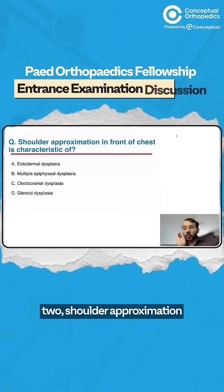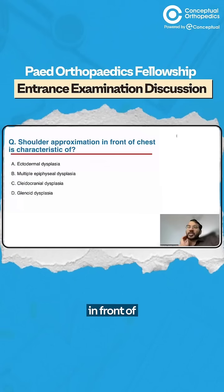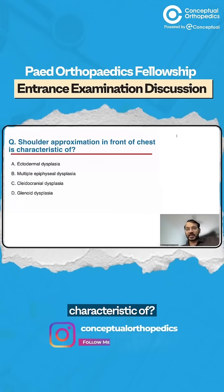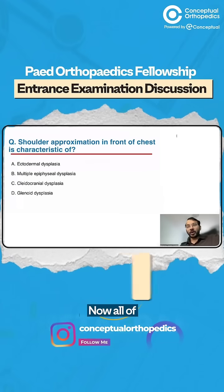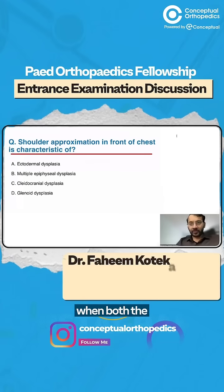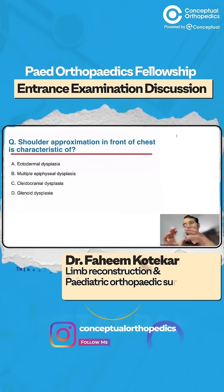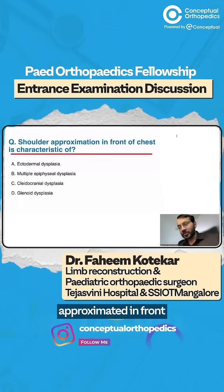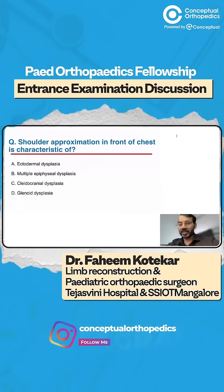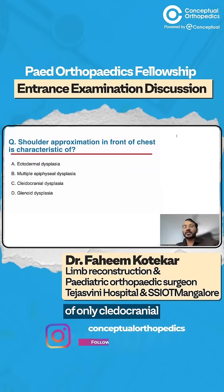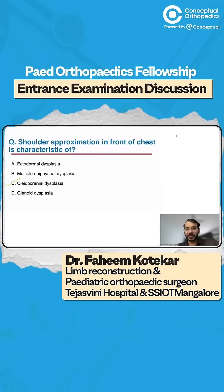Question number two: shoulder approximation in front of the chest is characteristic of which condition? When both the shoulders can be approximated in front of the chest, this is characteristic of only cleidocranial dysplasia.